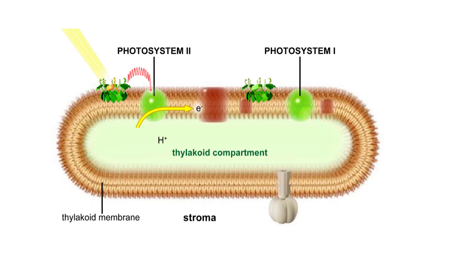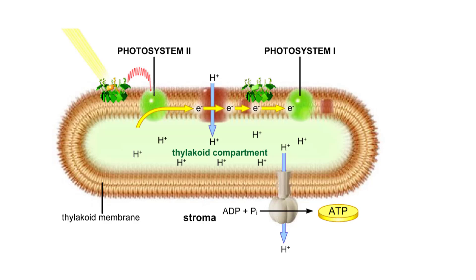The electrons from Photosystem II enter an electron transfer chain and continue on to Photosystem I. As electrons are transferred along the chain, hydrogen ions are shuttled across the thylakoid membrane and accumulate in the thylakoid compartment. Hydrogen ions then flow back into the stroma through ATP synthases, driving the attachment of inorganic phosphate to ADP to form ATP.